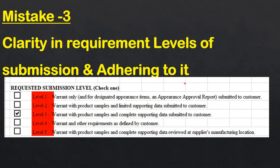Mistake number three: lack of clarity on the level of submission. It is not mandatory to always submit level three. For non-critical parts, you can discuss with your customer and as a supplier decide the level of submission. Based on non-criticality, you can go for level two or level four, where your documentation is reduced and unnecessary time is saved. The correct level should be selected and mentioned.